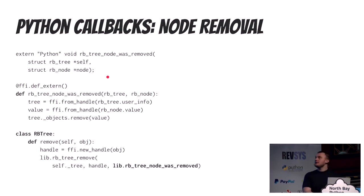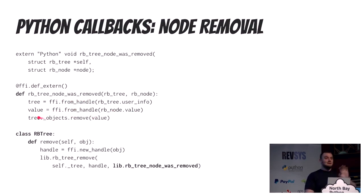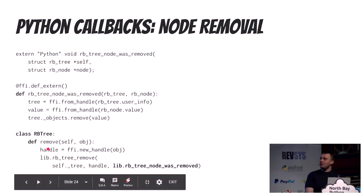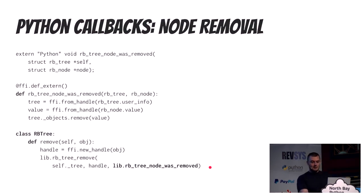For node removal, it's very much the same. We have an rbtree_node_was_removed callback representing a node got removed from the tree — it's defined in Python, it gets the tree and the value, and removes the value from the set of tracked objects. Our remove method on the tree passes lib.rbtree_node_was_removed as the removal callback. That's how you implement C callbacks in Python — CFFI translates things back and forth pretty much automatically for you.